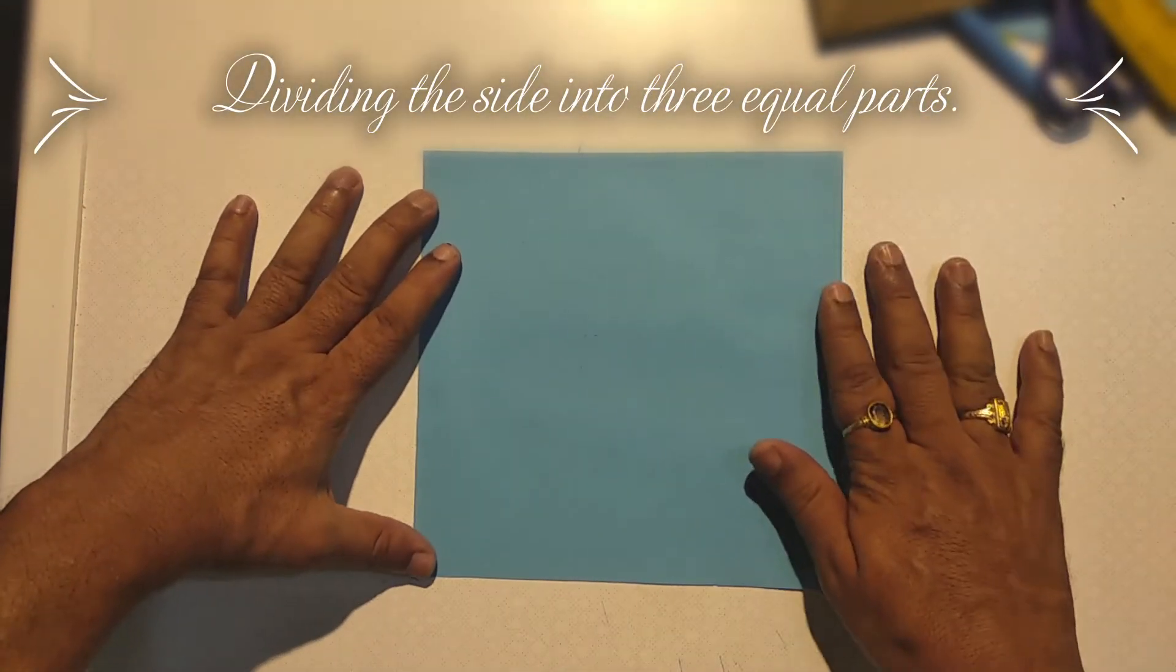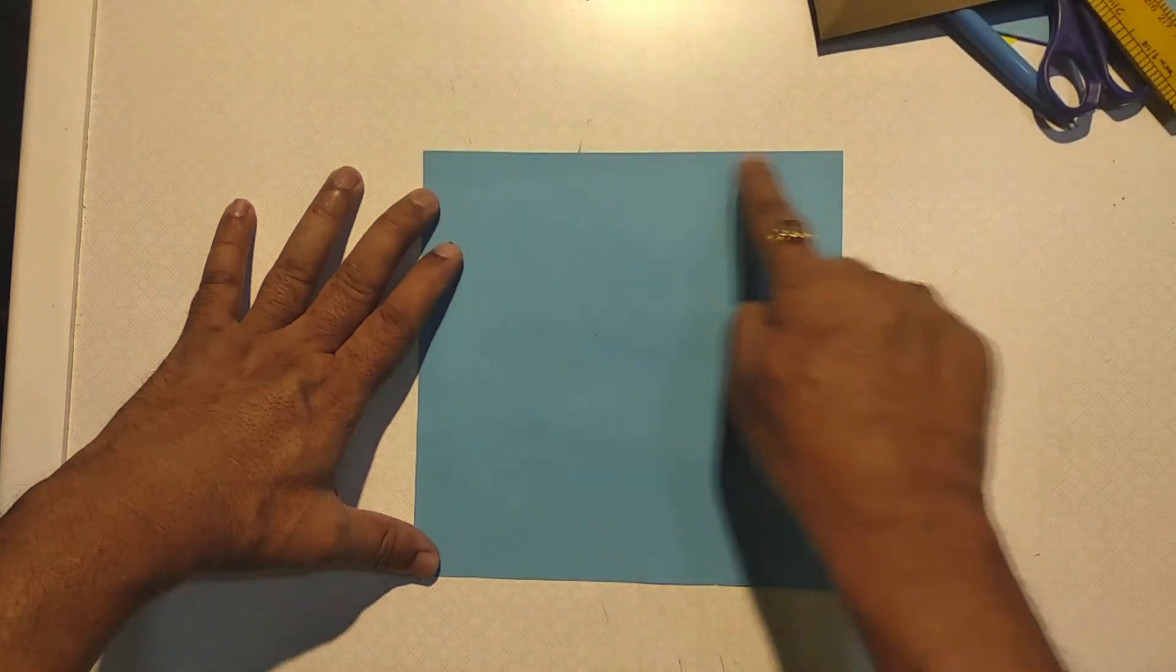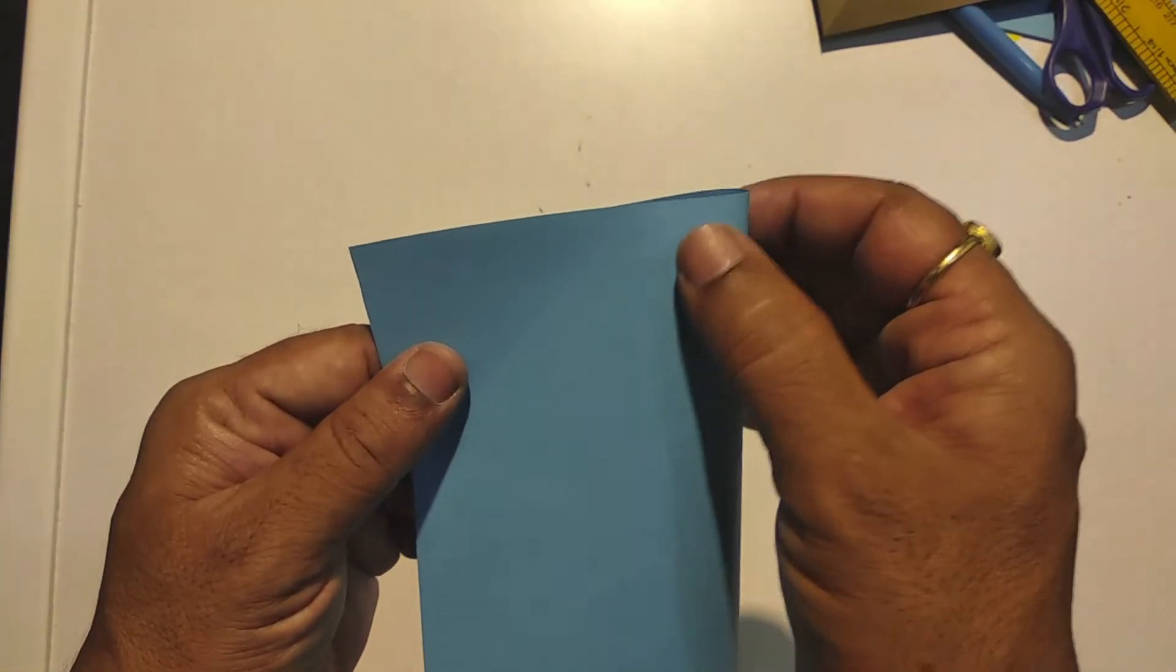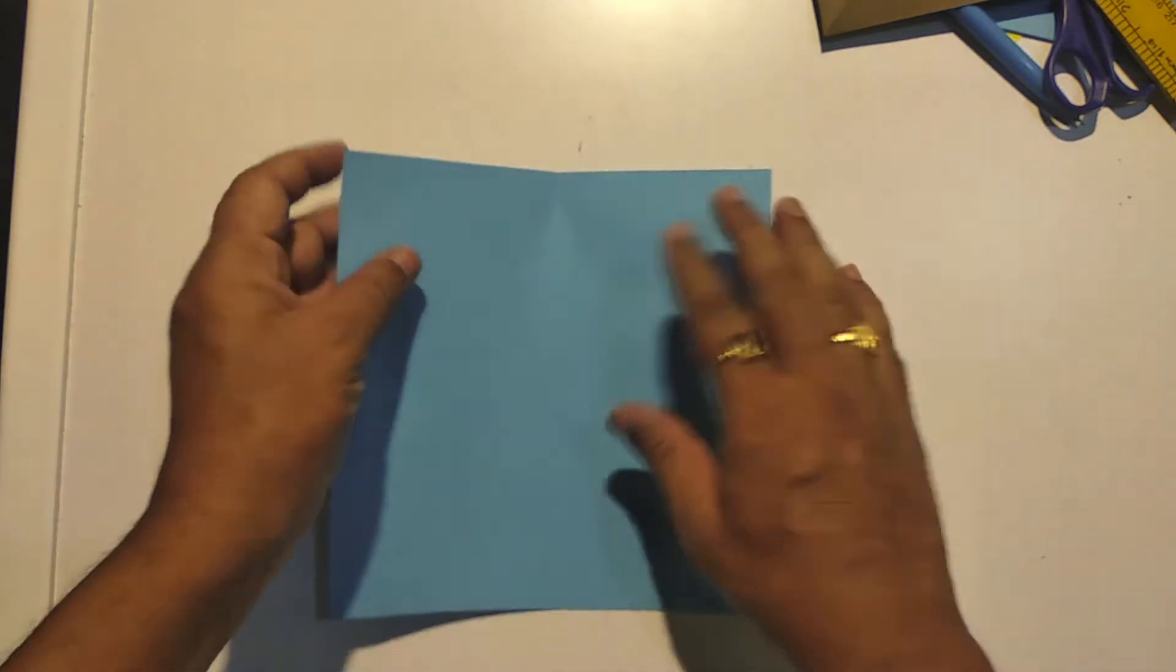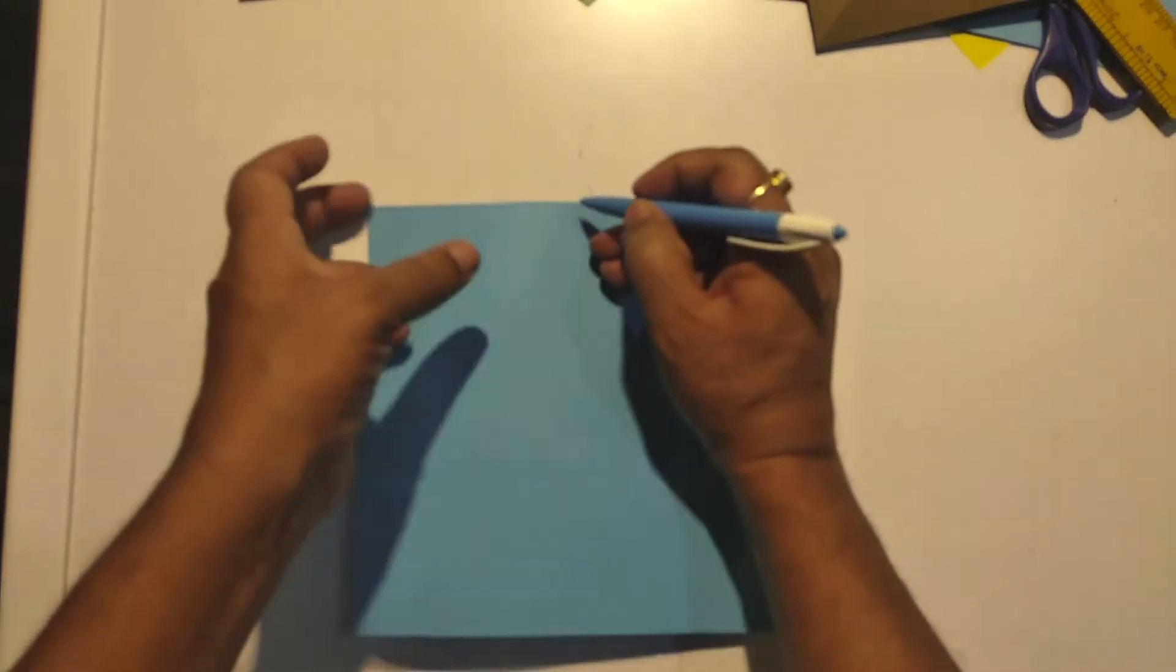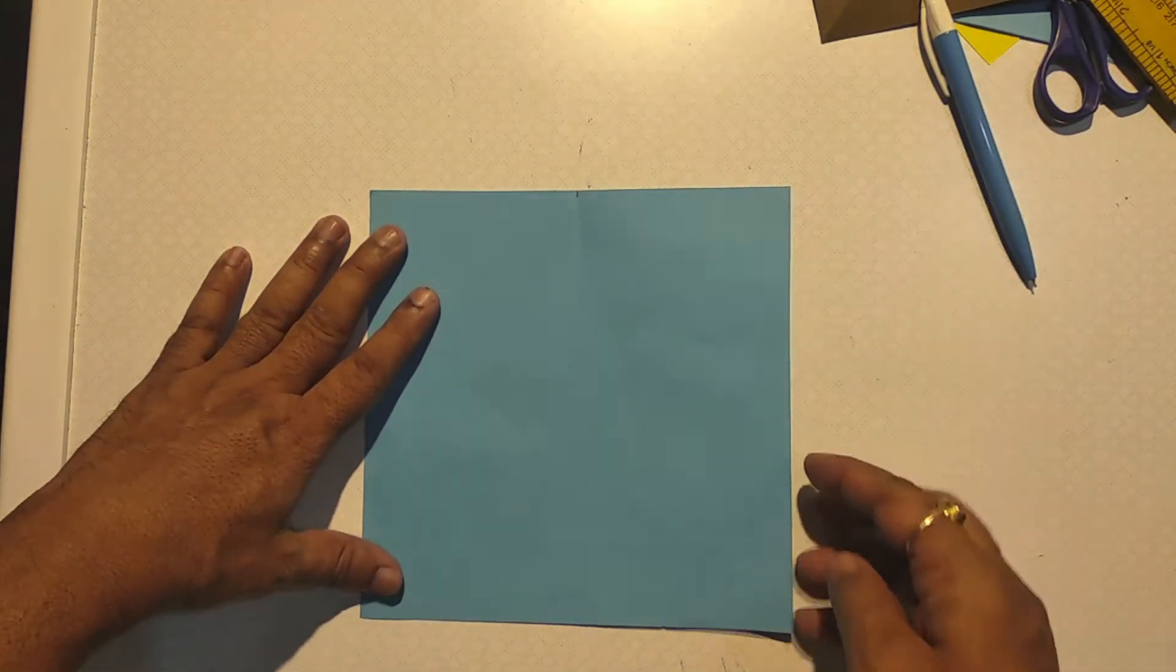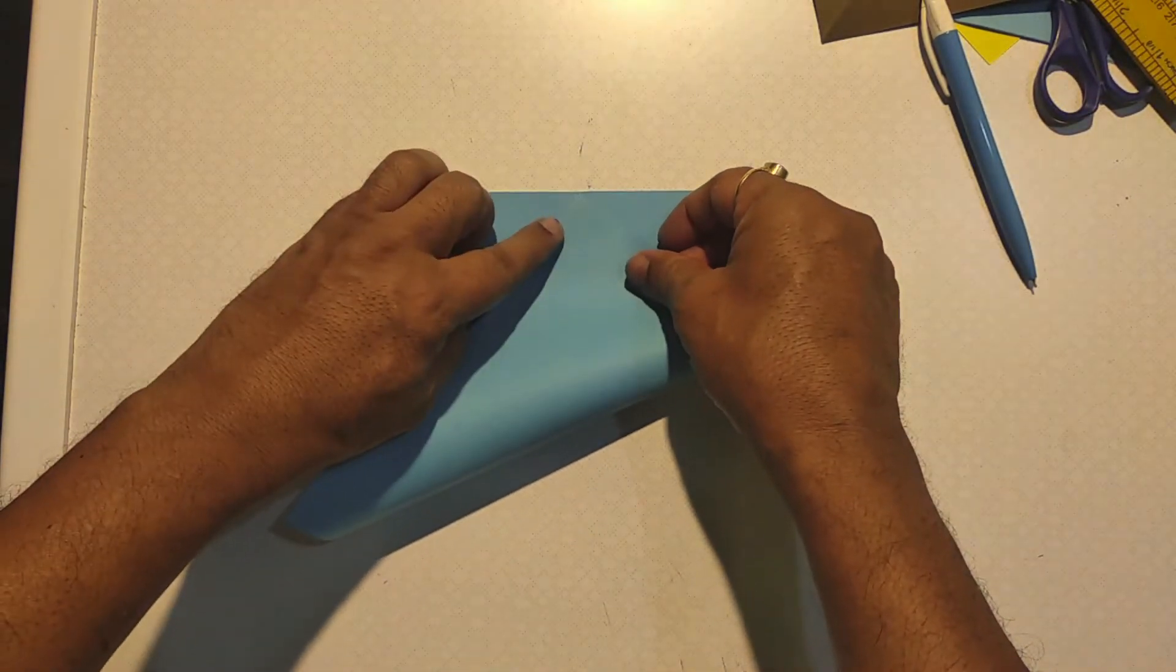Take a square piece of paper and mark the center of one side as shown. Now the bottom right corner of the paper is placed at this marked point.